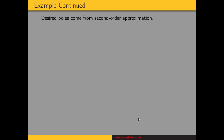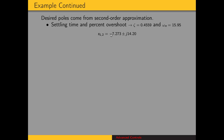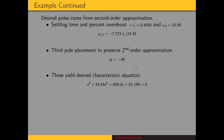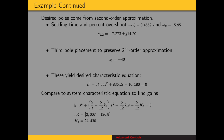Our desired poles come from the second order approximation. We had a desired settling time and percent overshoot, which give us the damping ratio and natural frequency, giving us two of our poles. Our third pole, since there are no open loop zeros in the system, we place at least five times as far from the real axis as our dominant second order pair — so the third pole is at negative 40. Comparing with the characteristic equation for our integral controller system gives us: K1 = 2007, K2 = 126.9, and ke = 24,430.